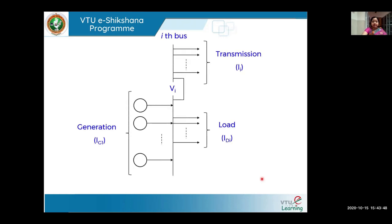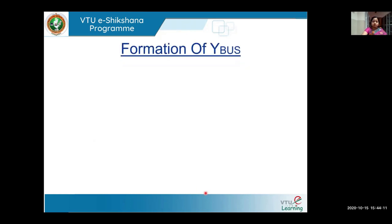Similarly, for the Ith bus current: Ii = IGi − IDi, meaning generator current minus load current gives the net current at the Ith bus. Now let us look at the formation of YBUS. YBUS can be formed in two basic ways: the inspection method and the singular transformation method.